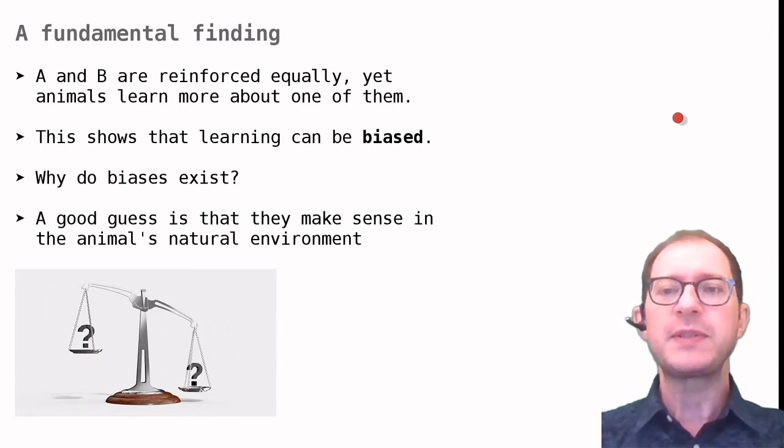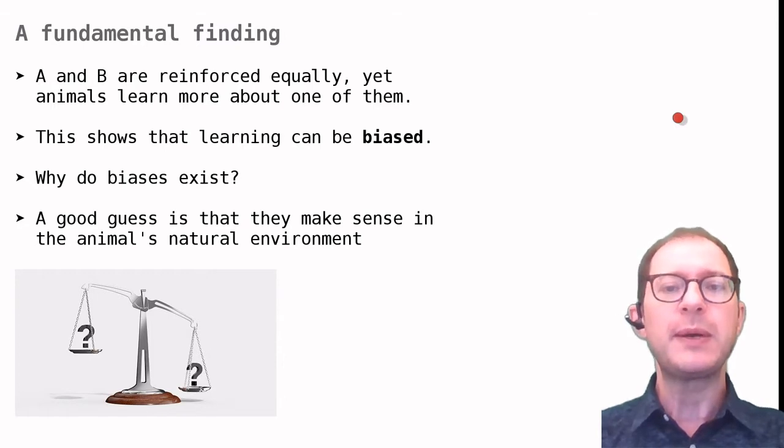However, overshadowing shows that often animals learn more about some stimuli than others, for example, more about visual than sound stimuli. In this case, we say that learning is biased. A good guess about these biases is that they make sense in the animal's natural environment. We can appreciate this better by looking at two more examples.